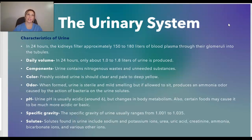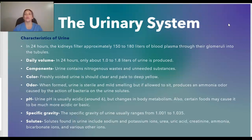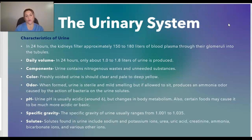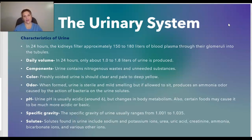In healthcare we don't always see healthy individuals — with a urinary tract infection, urine is often cloudy or malodorous. If someone is dehydrated, urine is usually darker and more concentrated. When urine is formed it is mild-smelling, but if allowed to sit it produces an ammonia odor caused by bacteria. The pH of urine is usually acidic, around 6, but changes with body metabolism and diet. The specific gravity of urine usually ranges from 1.001 to 1.035. Solutes found in urine include sodium, potassium ions, urea, uric acid, creatinine, ammonia, bicarbonate ions, and various other ions.